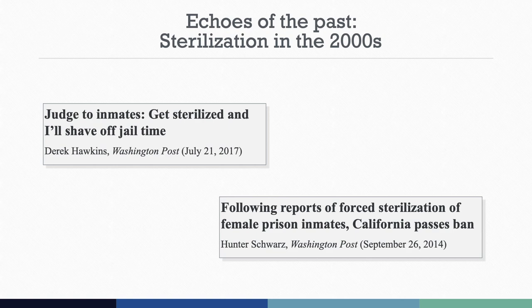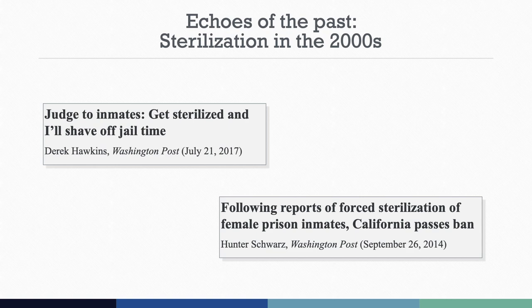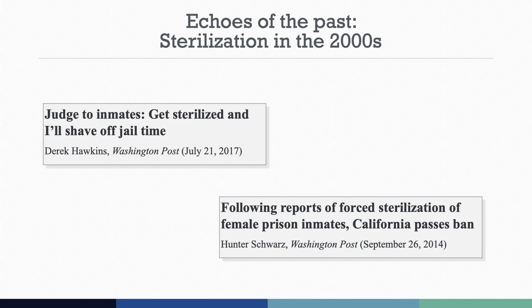Sterilization continues to make headlines, often as it relates to incarcerated people and criminal sentencing. Investigative reporting revealed in 2014 that from 2006 to 2010, at least 132 inmates in California prisons were sterilized illegally. The sterilizations were characterized by unsigned consent forms, falsified documents, and women stating they were coerced. One of the doctors involved noted to a reporter that the cost of sterilizations was small compared to what you save in welfare for these unwanted children. New laws were passed as a result to better protect inmates and improve consent procedures. In 2018, however, a woman awaiting sentencing underwent sterilization after the judge suggested this could favorably impact how long she was incarcerated — an outcome many argued was coercive, as the pressures of a possible shorter sentence make true informed consent impossible.